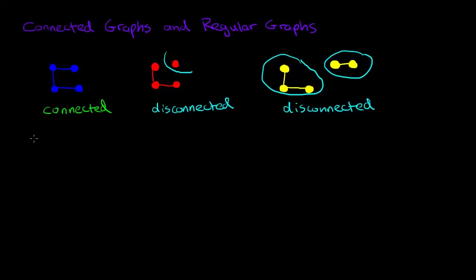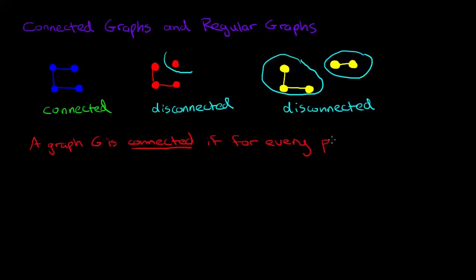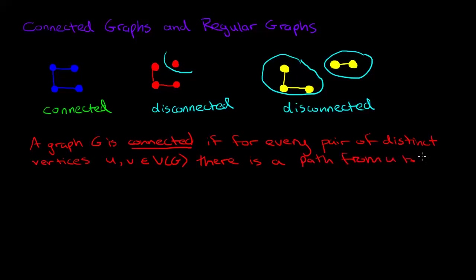So let's be very clear about what exactly is a connected graph and define it. A graph G is connected if for every pair of distinct vertices u and v in the vertex set, there is a path from u to v in the graph. If we take a look at the example of the connected graph and you pick any pair of vertices, you'll be able to find a path that goes between them. In fact this particular example was indeed a path.